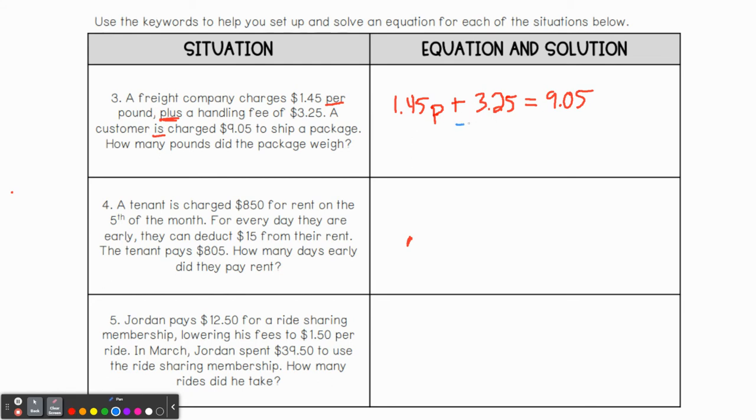So that means now we just need to solve. Two-step equation should be pretty simple. Subtract $3.25 because I want the variable by itself. What do I get when I subtract those two? 1.45P equals $9.05 minus $3.25 is going to give us $5.80 total. And then we need to divide by 1.45 because we want to know how many pounds. So we should have four pounds total.